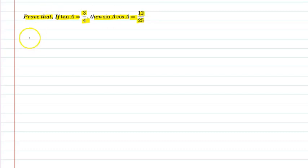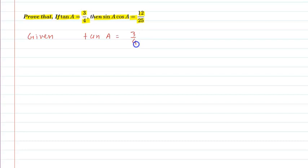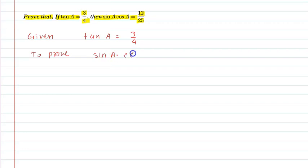So, let us see the given information in this question. To prove: sin A into cos A is equal to 12/25.